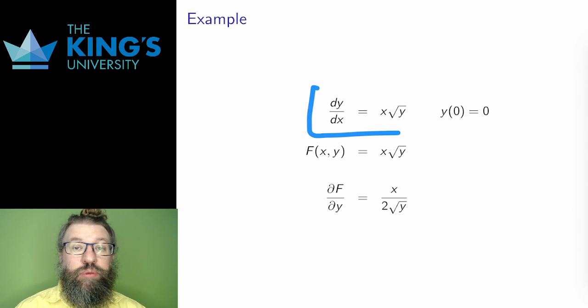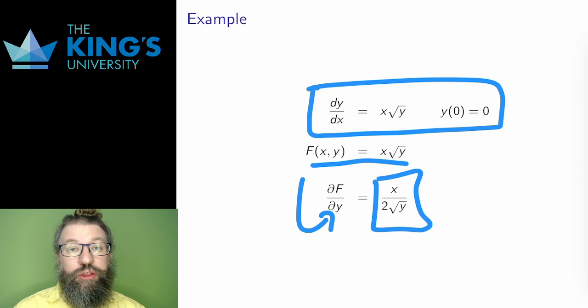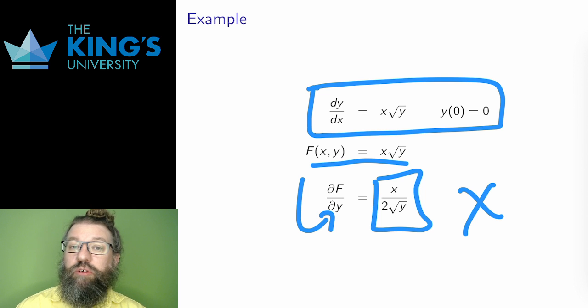Here's an example. To see if this right side is Lipschitz continuous at 0, 0, I take the derivative in y. I do that by pretending x is a constant. The derivative is not defined at y equals 0, and the slope gets arbitrarily steep. So this is not Lipschitz continuous at 0, 0, and so unique solutions are not guaranteed. Now, the solution might still be unique, but the theorem cannot provide certainty to that fact. This function is Lipschitz continuous anywhere else, though.